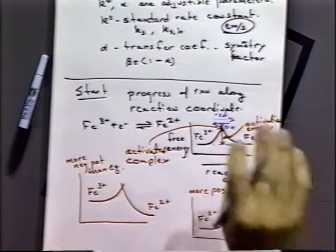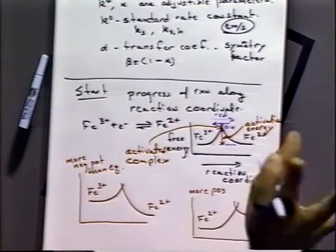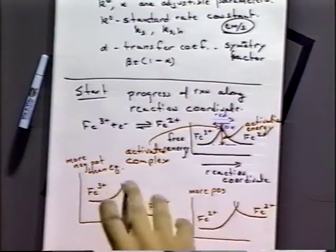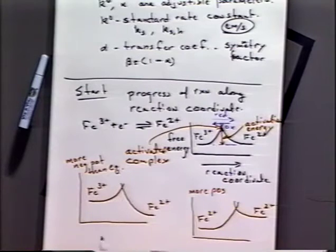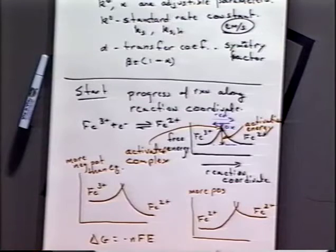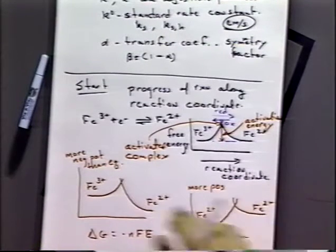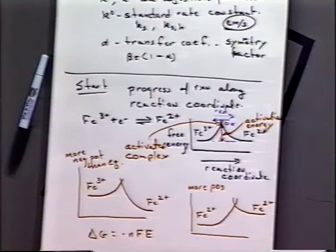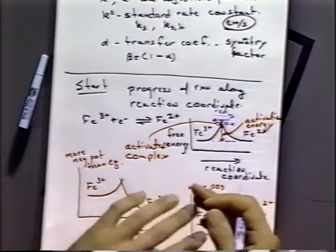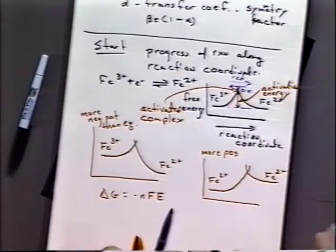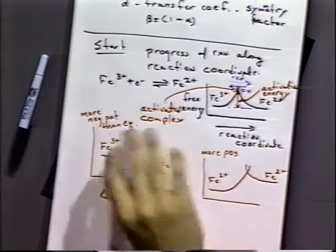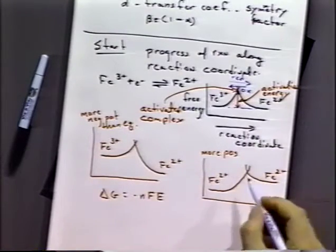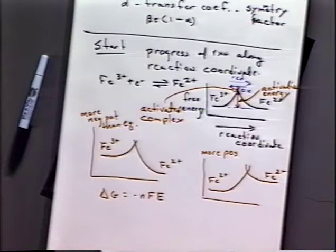The nice thing about electrochemistry is that we can change the free energy simply by turning a knob on our instrument. We can change delta G, the free energy available to a system, simply by turning a knob on our potentiostat or electrochemical instrument. That's something you really can't do very easily with a homogeneous process — you can change the temperature and some other things, but with electrochemistry you can just change the free energy.